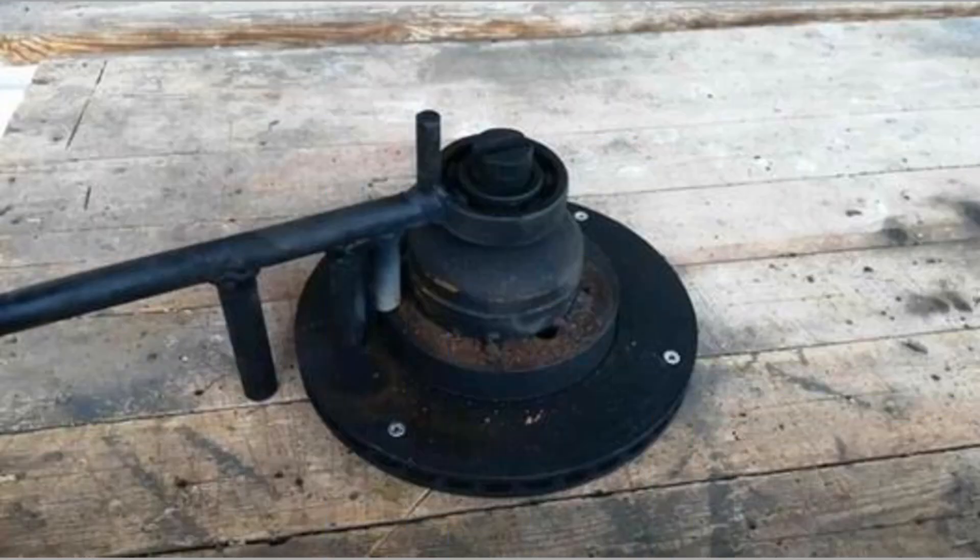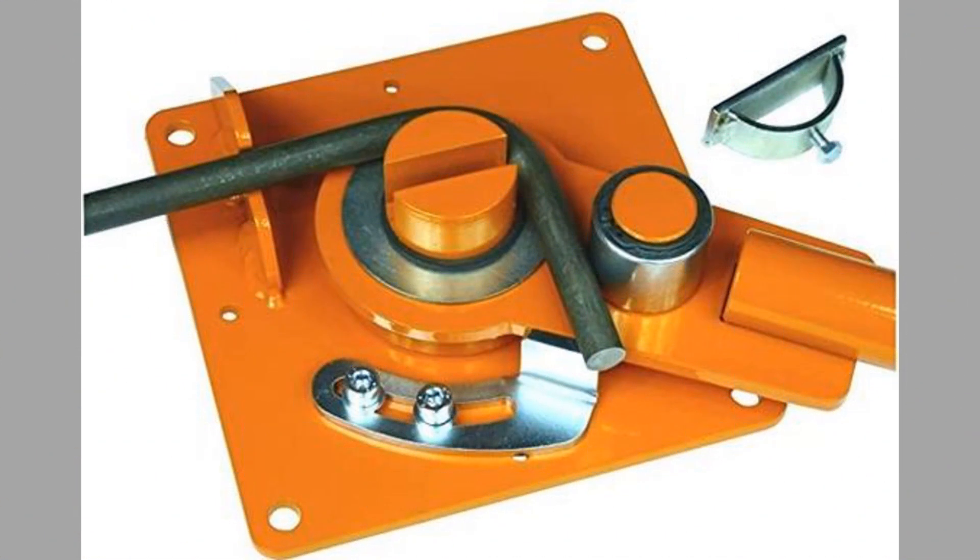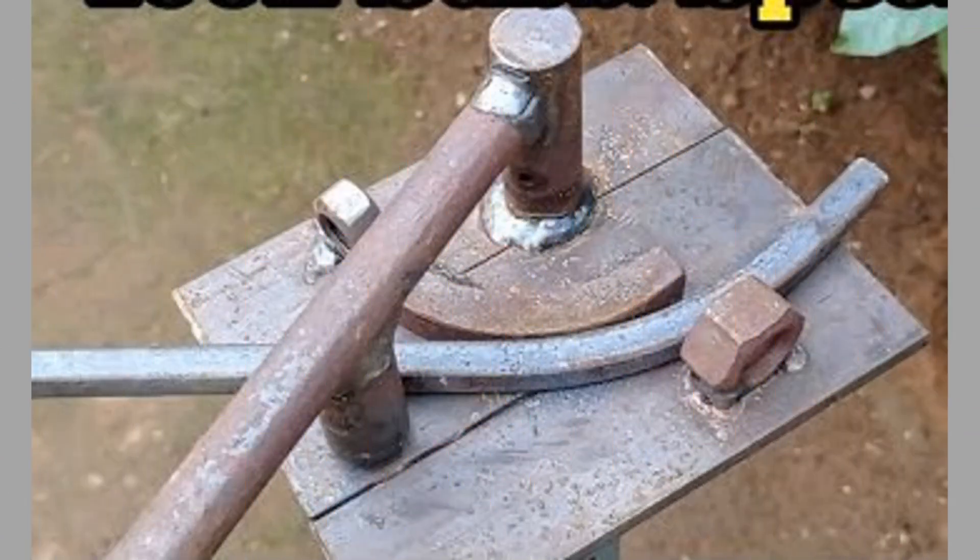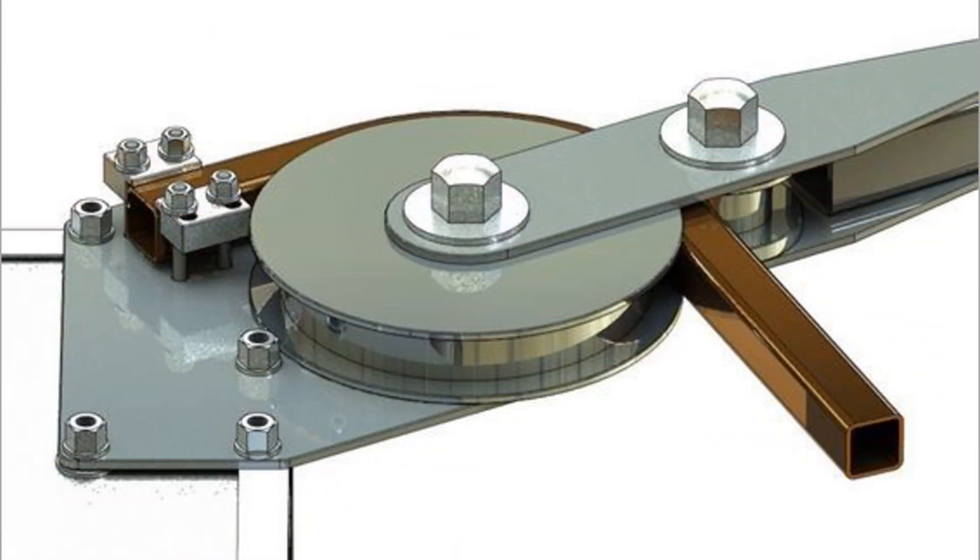When bending is done, the residual stress causes the metal to spring back toward its original position, so the metal must be overbent to achieve a proper bend angle. The amount of spring back is dependent on the material and the type of forming.